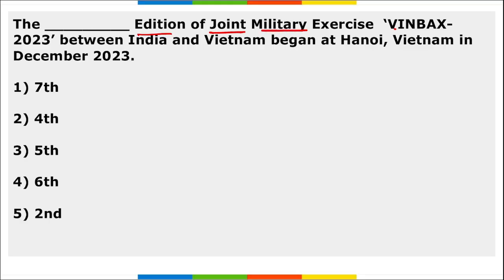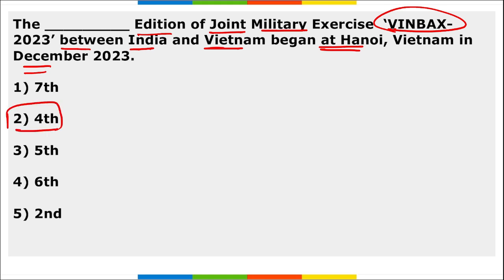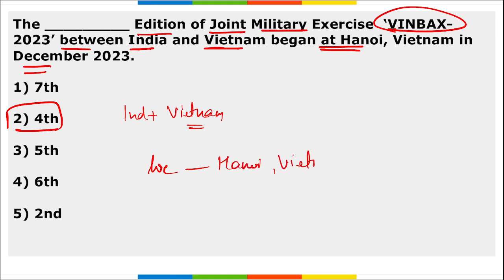Revision: The fourth edition of joint military exercise Winbacks between India and Vietnam began in Hanoi, Vietnam in December, from 11th to 21st December.